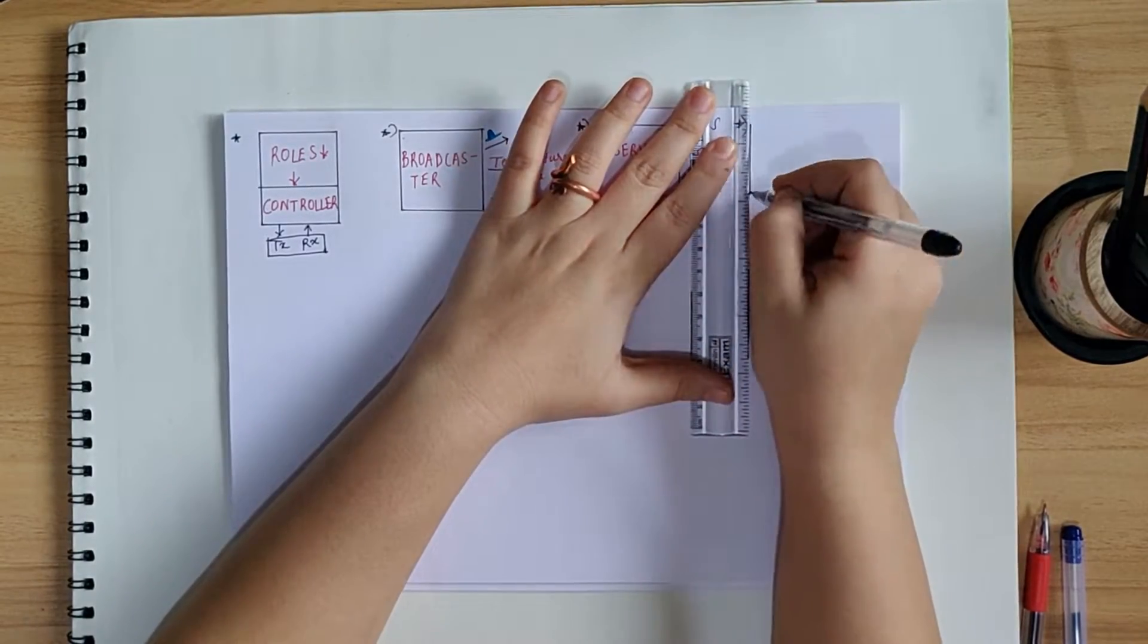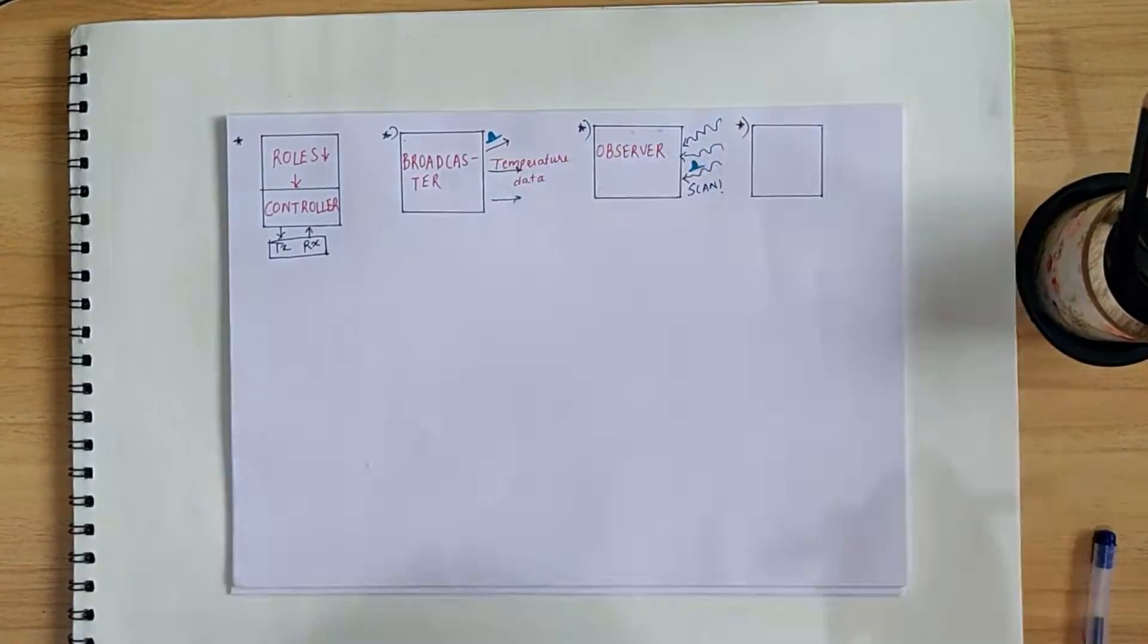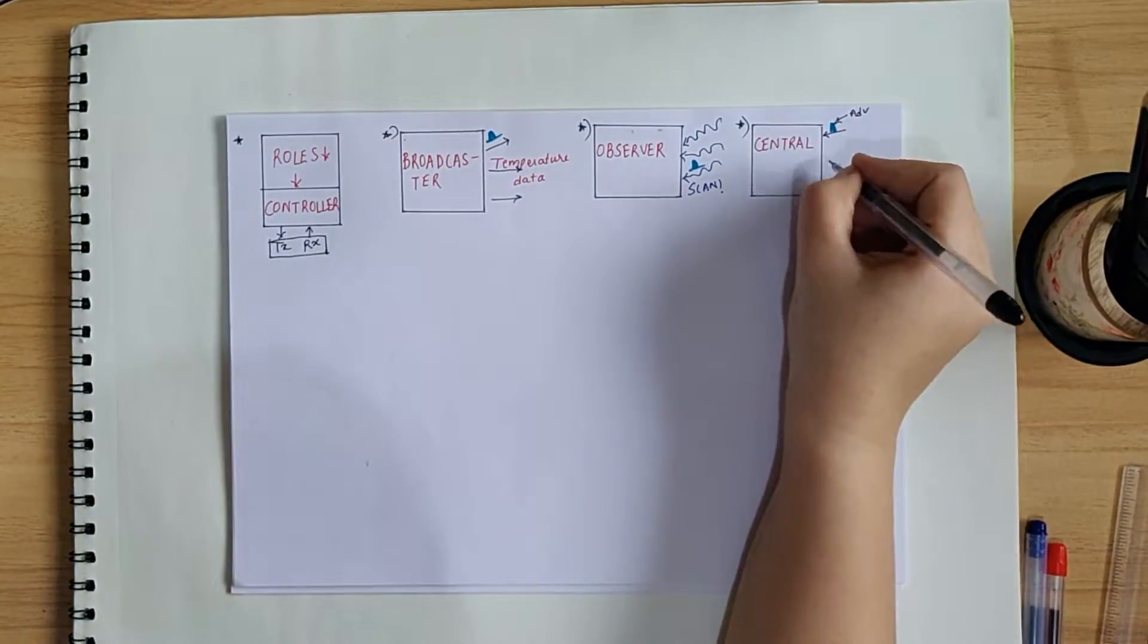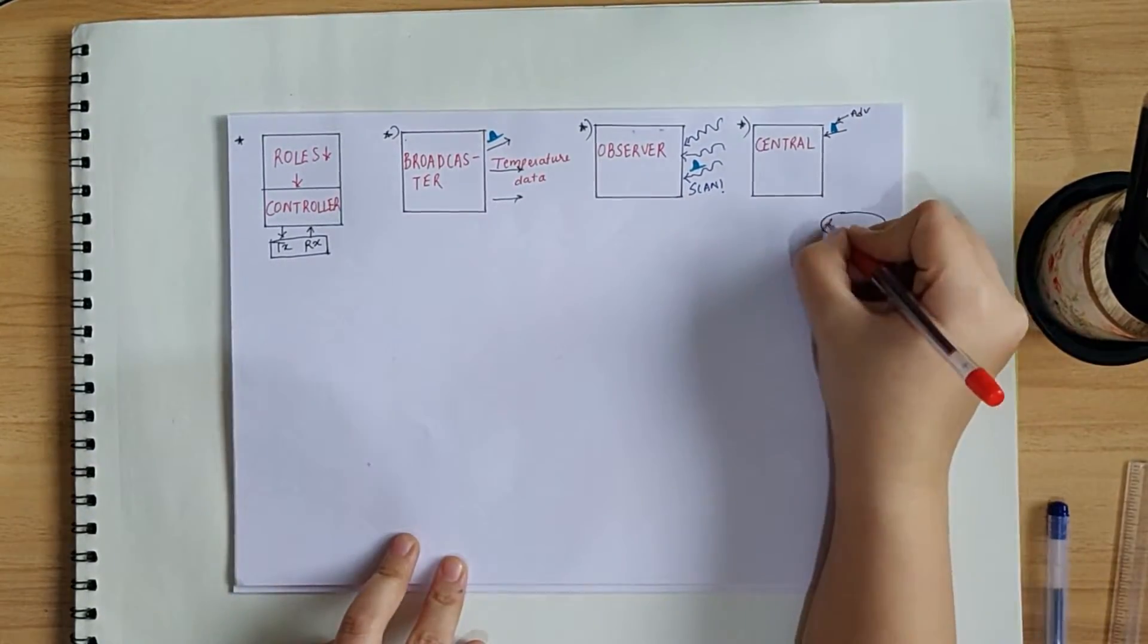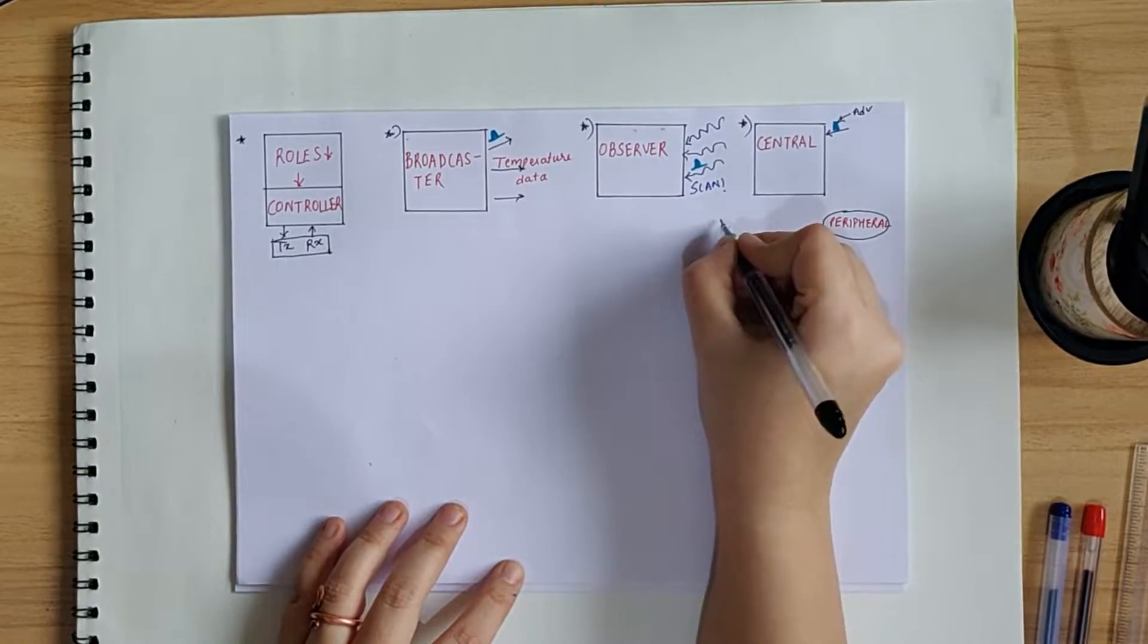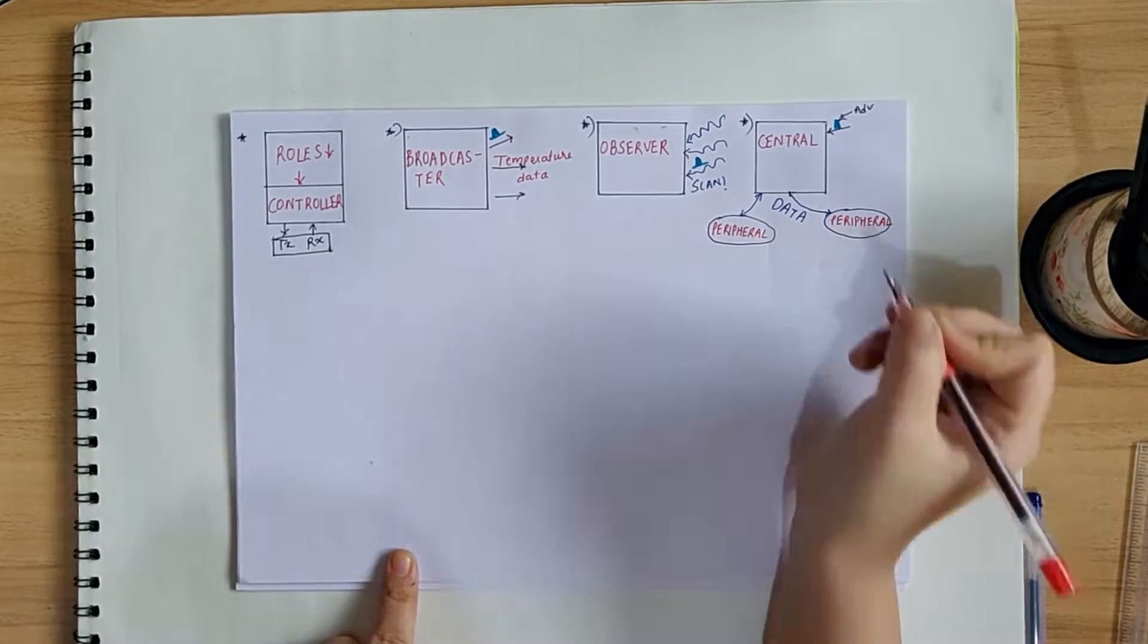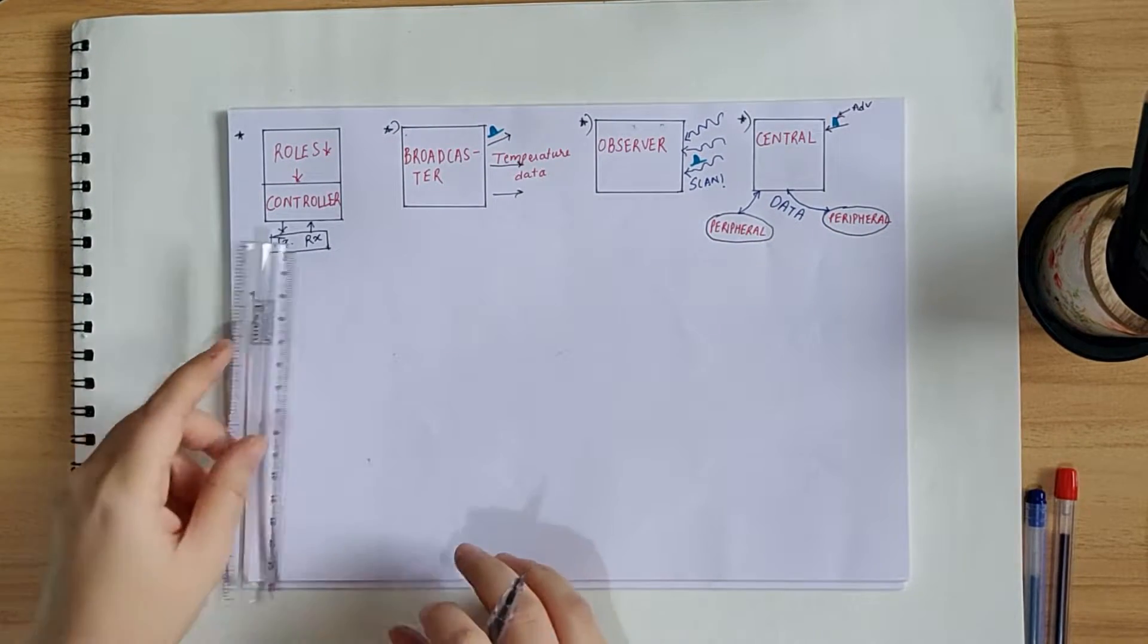Next comes central. It listens for advertisements, but unlike an observer, it can interact with any station. It can initiate and start the connection process and thus is known as the master. It can connect with multiple peripherals, which brings us to the last role.